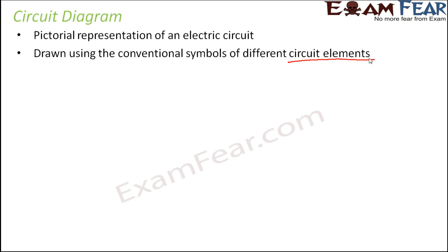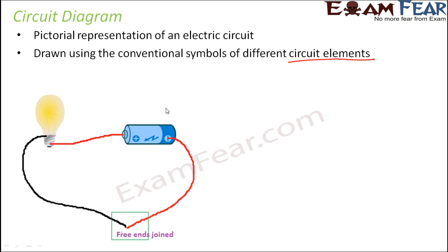It is drawn using the conventional symbols of different circuit elements. What are circuit elements? They are the various components present in a circuit — for example, the bulb, the battery, and the switch. It is very important that we use the correct symbol for each element. Let us look at a conventional circuit — this is how it looks in real life.